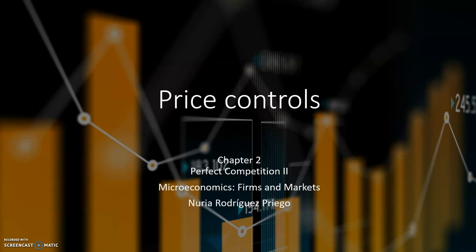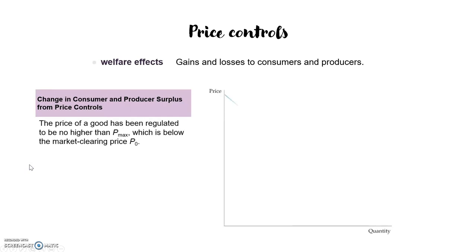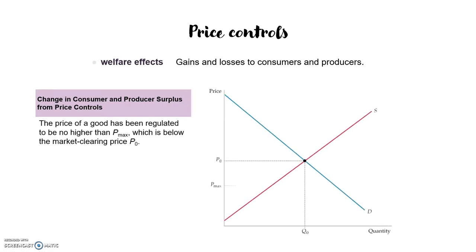Hi, this is the second video of Chapter 2, Perfect Competition. This video is about price controls. There are two types of price controls: the first one is when the government establishes a price ceiling, and the second one is when the government establishes a price floor.